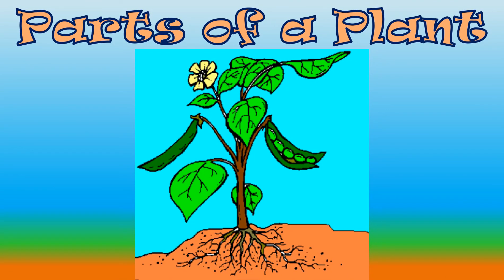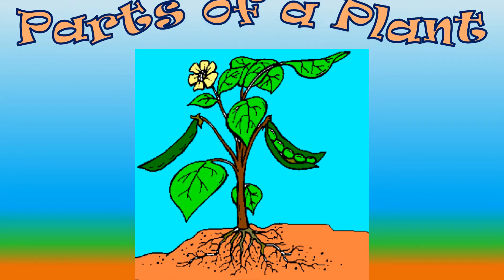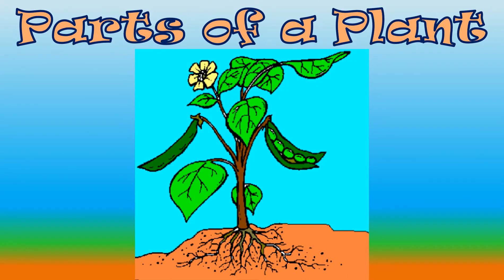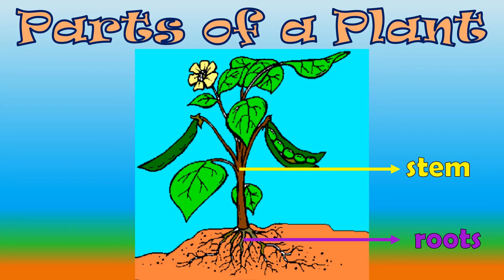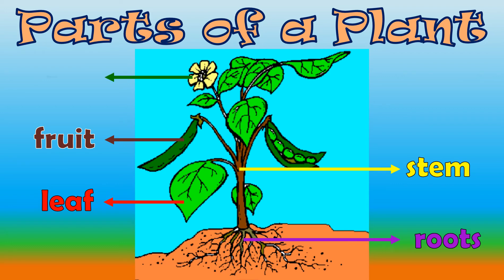Now, let's study the parts of a plant. There are five main parts, namely: root, stem, leaf, fruit, and flowers.